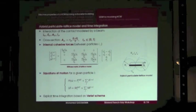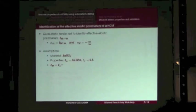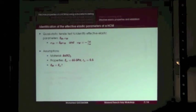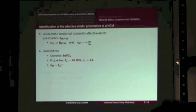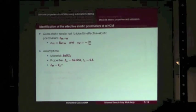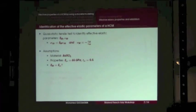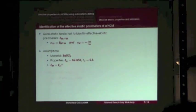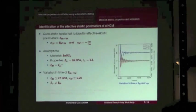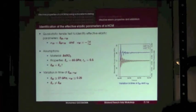This equation is solved by an explicit time integration based on the Verlet scheme. We now identify the effective elastic parameters of the homogeneous continuous material. We consider a quasi-static tensile test to identify the effective elastic parameters — Young's modulus and Poisson's ratio — using the classical equations of elasticity. We assume the material is barium titanate with known properties, and we suppose the macroscopic Young's modulus is initially the same as the microscopic one. Here we have the variation in time of both parameters.